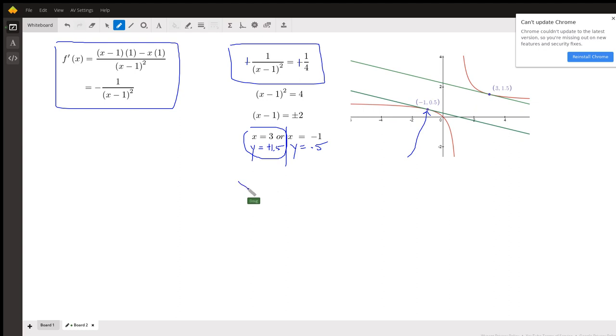Well, using point slope, y minus 1.5, y minus y1, equals the slope. Well, we already know the slope of that green line has to be negative one-fourth times the quantity x minus 3. So that's the equation of the second line. You can put that in slope-intercept form, but I'll leave that to you. There you go.